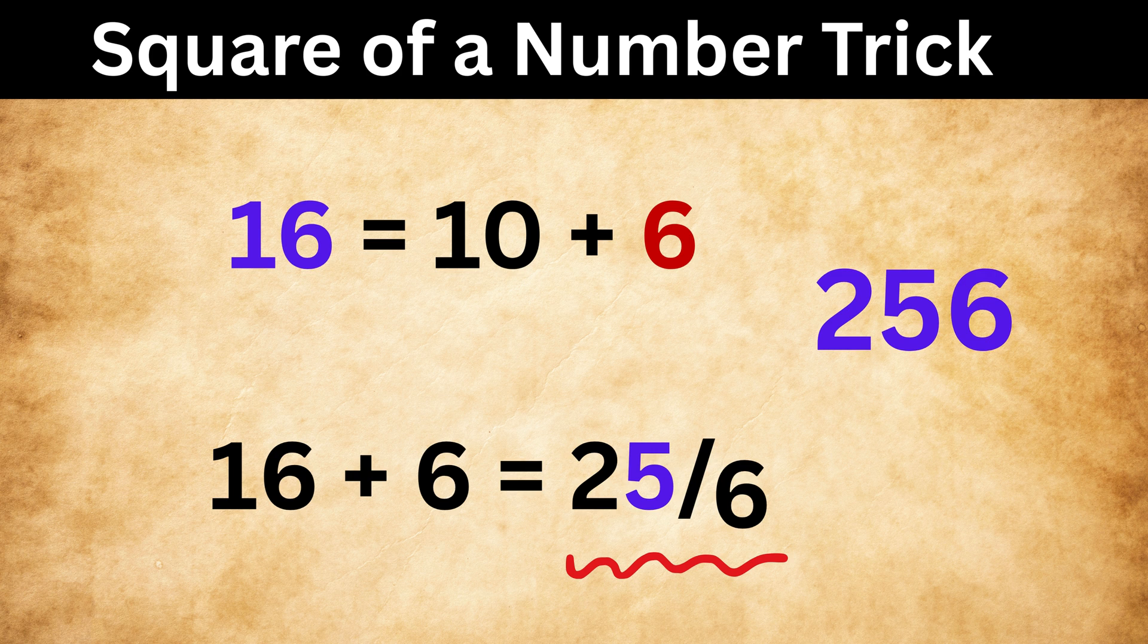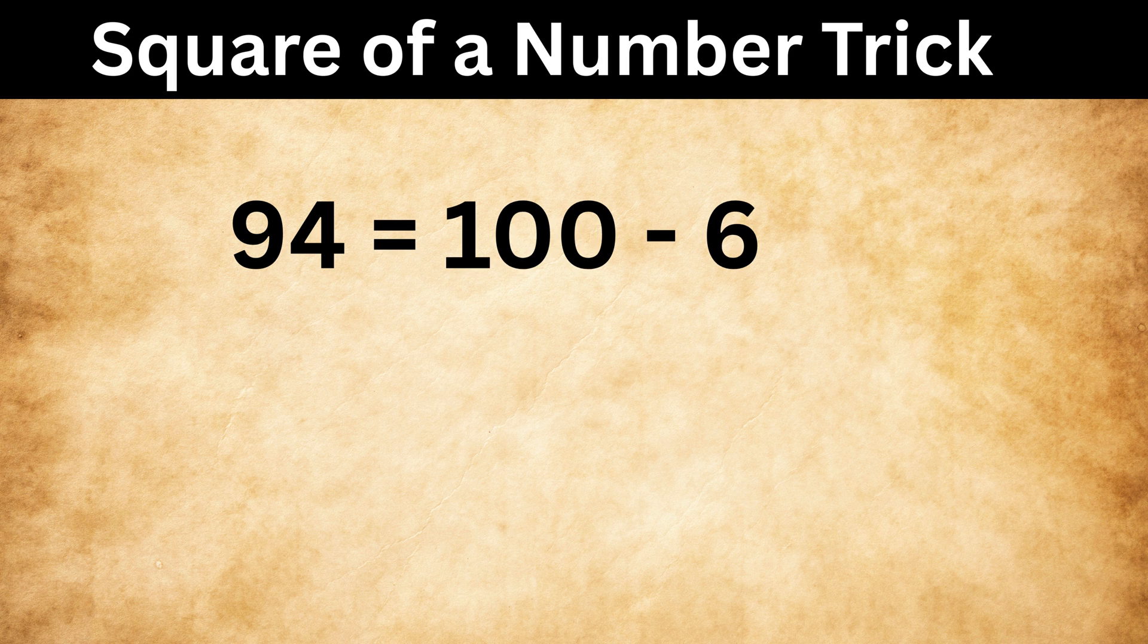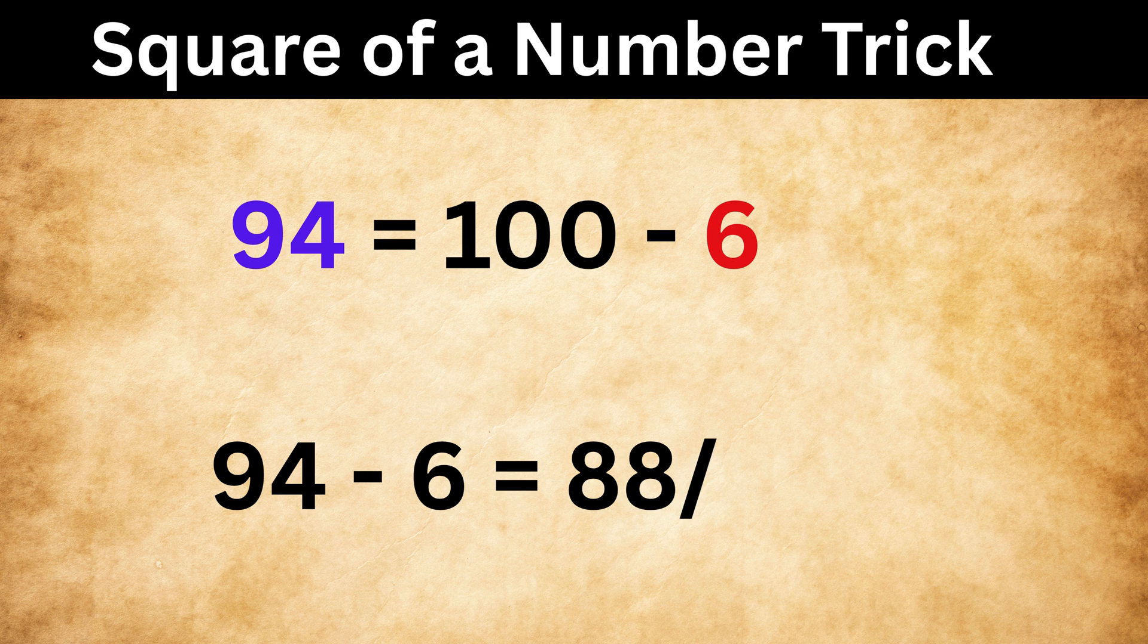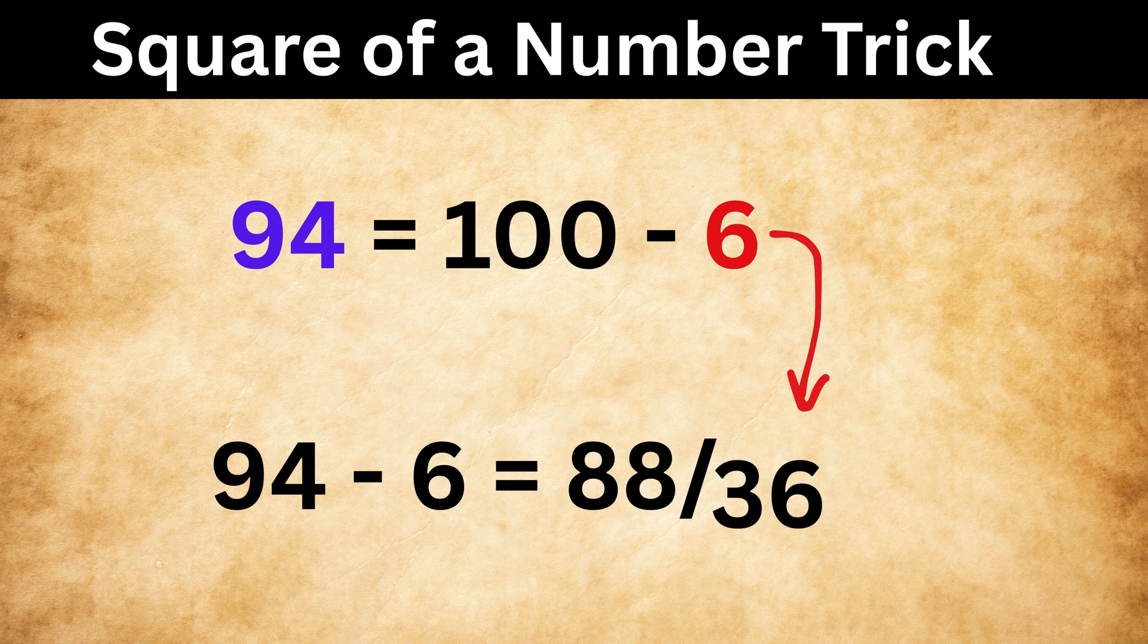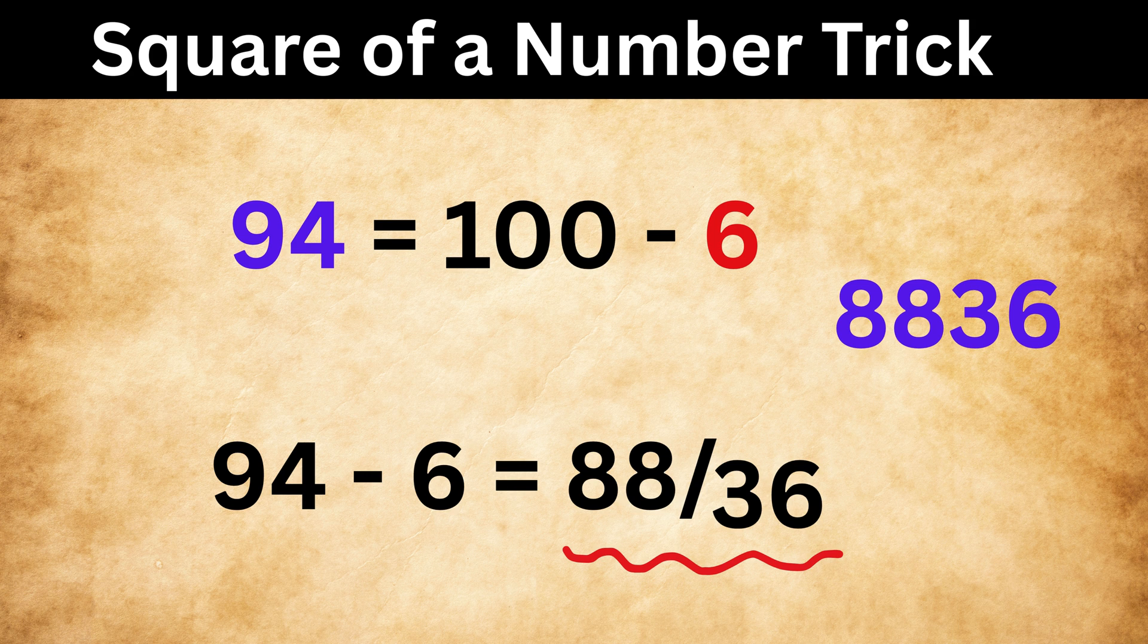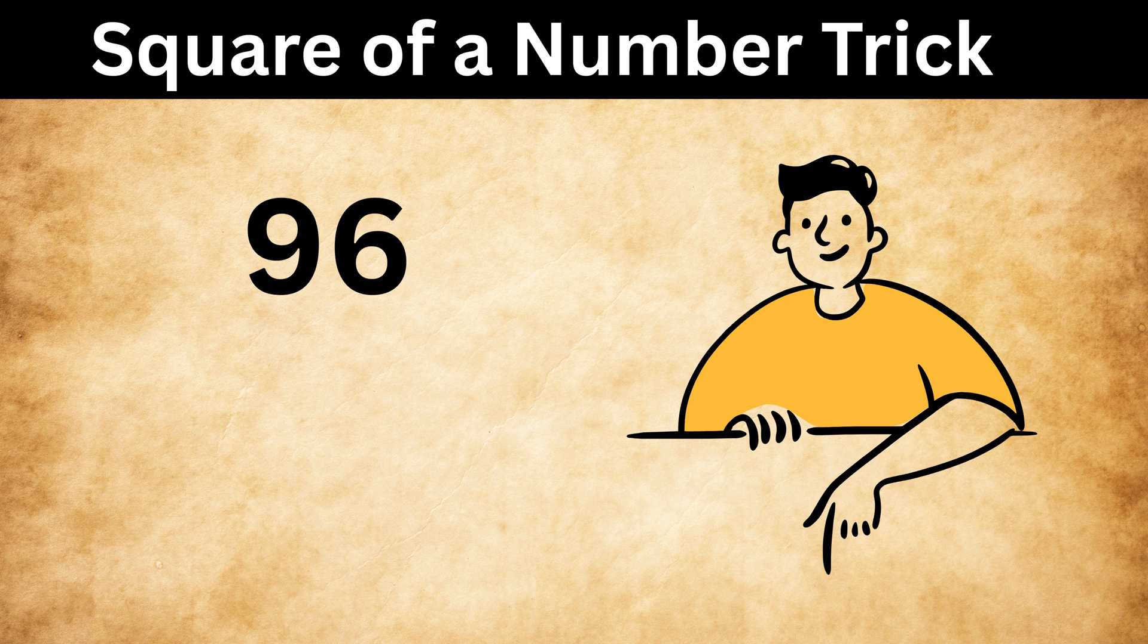Finally, let us look at another example of 94 square. It is close to 100, so write it as 100 minus 6. Now, the first number will be 94 minus this 6, or 88. Then put a slash, and write 6 square, or 36. And since it will be a 4-digit number, so we are done. 94 square is 8836, and that's it. Now let me know in the comments, what will be the value of 96 square.